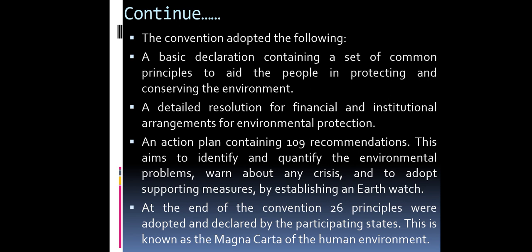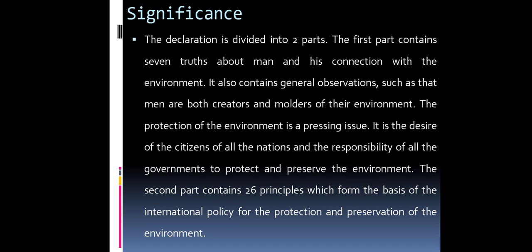This is known as the Magna Carta of the human environment. Significance. The declaration is divided into two parts. The first part contains seven truths about man and his connection with the environment, including general observations such as that men are both creators and molders of their environment, and that the protection of the environment is a pressing issue and the responsibility of all governments. The second part contains 26 principles which form the basis of international policy for the protection and preservation of the environment.